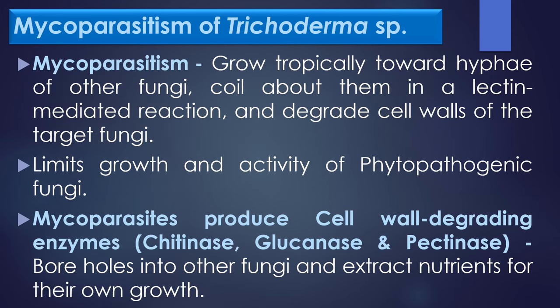Mycoparasitism of Trichoderma species: Trichoderma species grow tropically towards hyphae of other fungi, coil about them in a lectin-mediated reaction, and degrade cell walls of the target fungi. This process is called mycoparasitism. Mycoparasitism limits the growth and activity of plant pathogenic fungi and other phytopathogens. Mycoparasites produce cell wall degrading enzymes like chitinase, glucanase, and pectinase, which allows them to bore holes into other fungi and extract nutrients for their own growth.